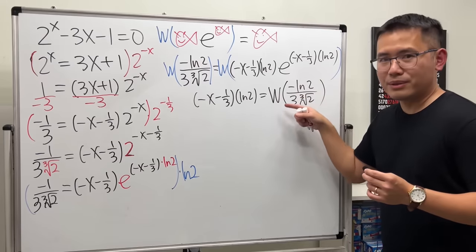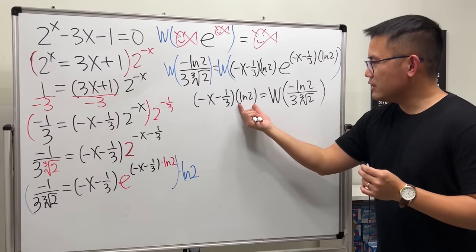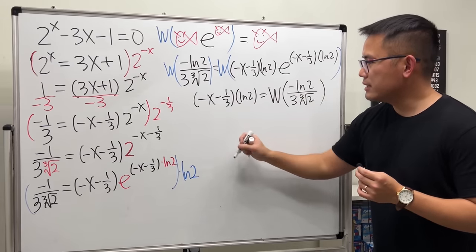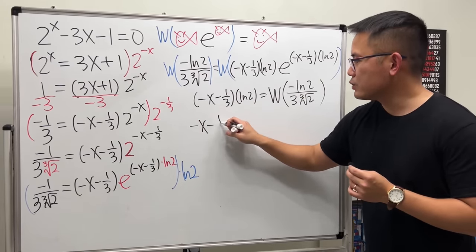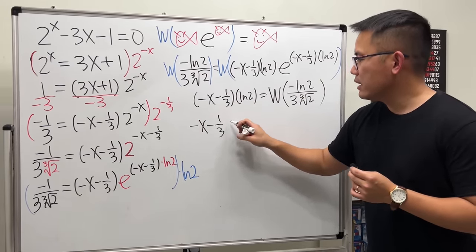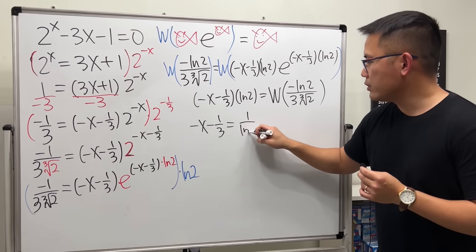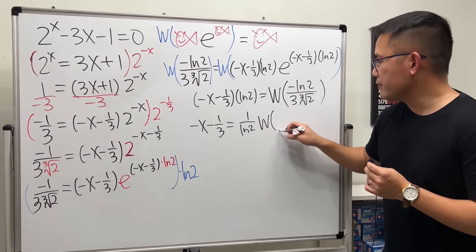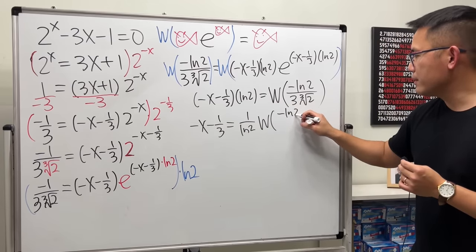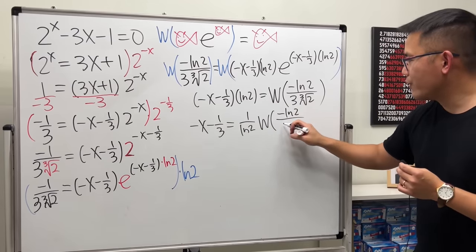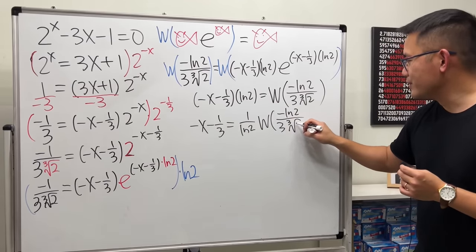Now we just have one x to isolate. Divide both sides by ln 2, giving −x − 1/3 = (1/ln 2) · W(−ln 2 / (3 · ∛2)). Then isolate x from there.